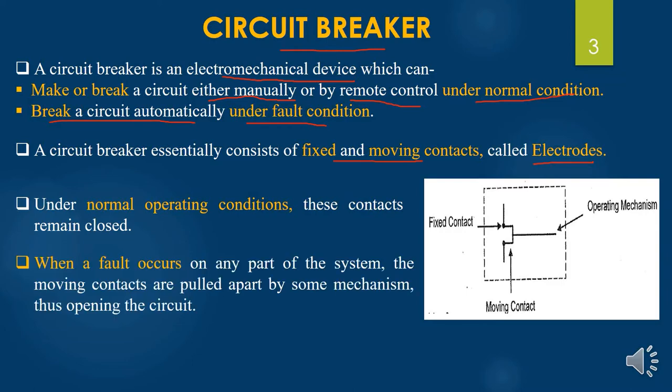But when a fault occurs, the moving contact has a trip coil attached with it. The trip coil gets energized and therefore the moving contact is pulled away from the fixed contact. The two contacts — fixed contact and moving contact — are separated from each other, and the connection between them is broken. Therefore, the faulty current is interrupted from flowing into the circuit.